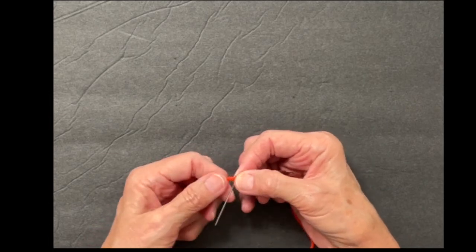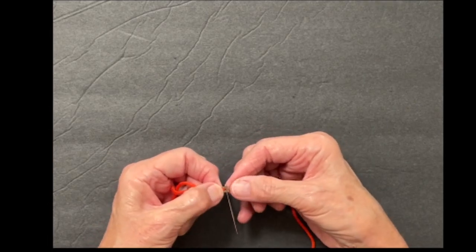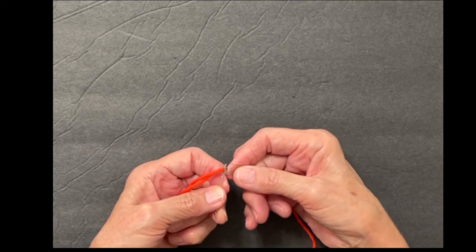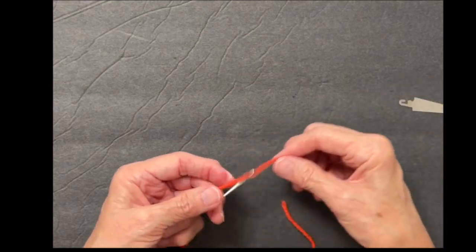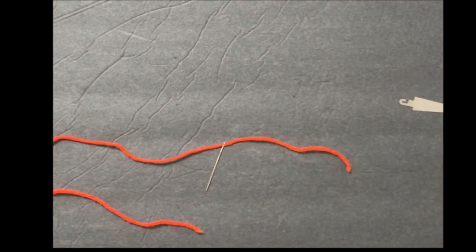And sometimes you may have to get a little rough with it. It's not something, if the yarn is really thick, you're putting two layers of yarn through there as well as the needle threader. So you may have to give it a little tug, but doesn't take a whole lot and that needle is threaded and ready to go.